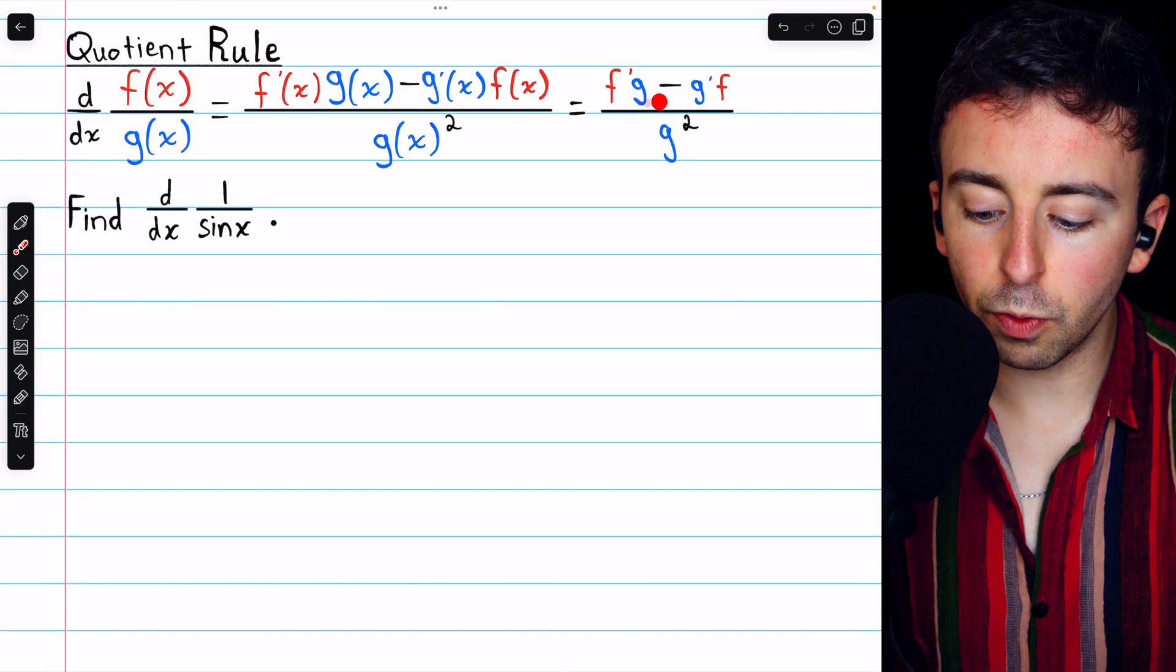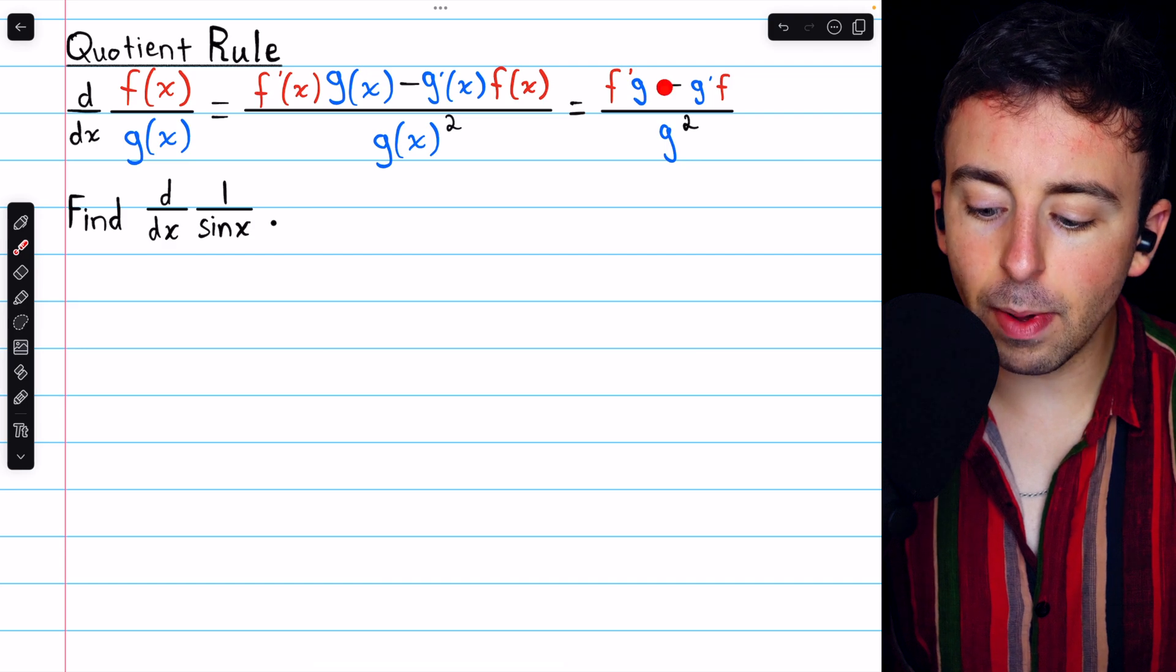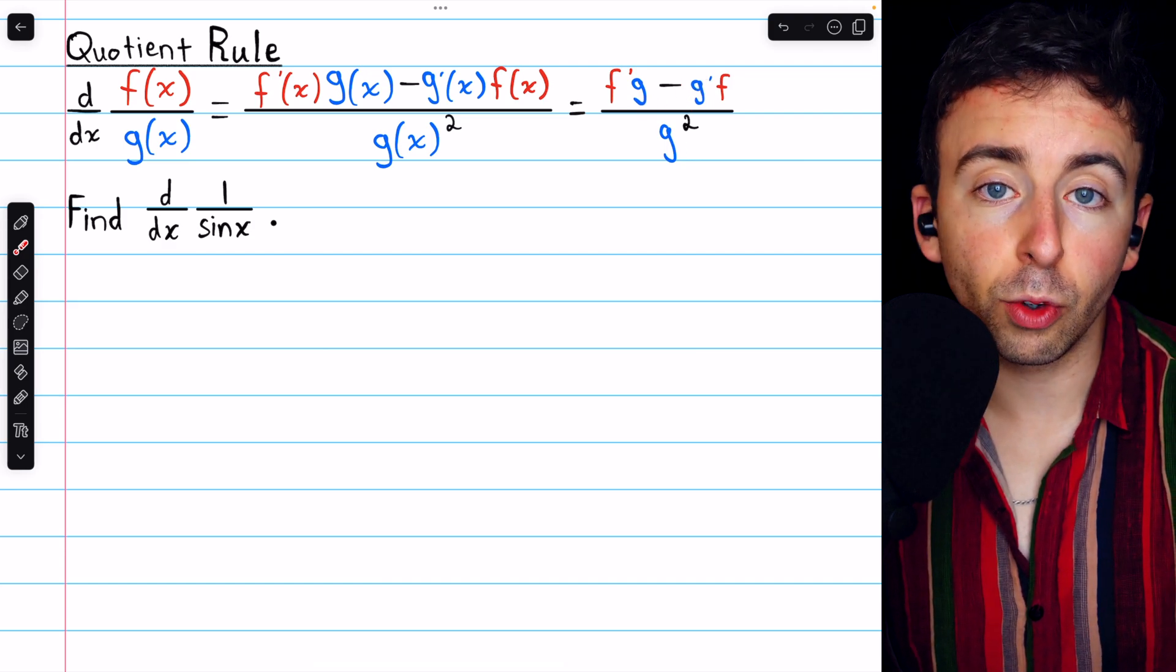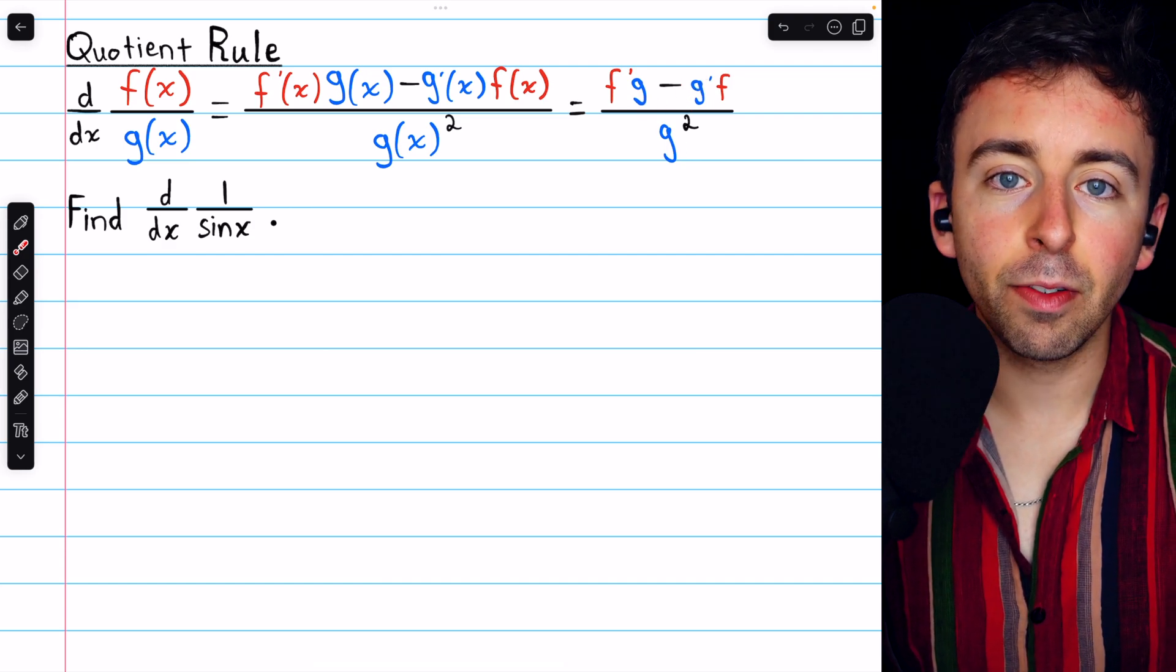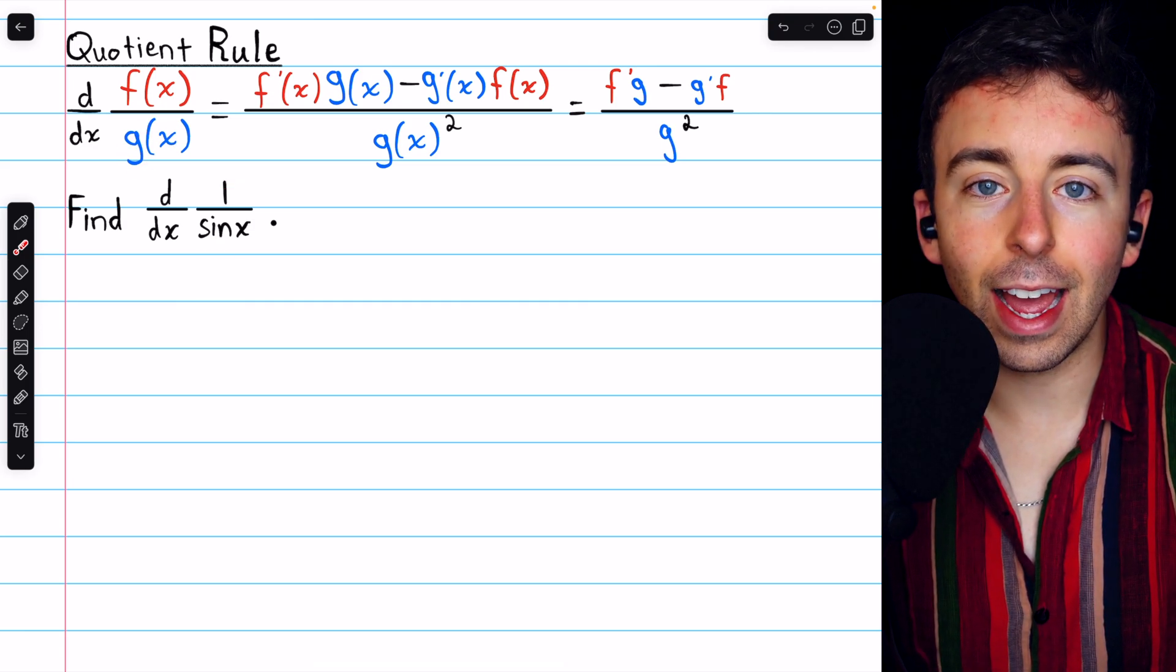Here is the quotient rule for your reference. The derivative of f divided by g is f prime g minus g prime f all over g squared. In our case, f, the numerator function, is 1, and g, the denominator function, is sine x.